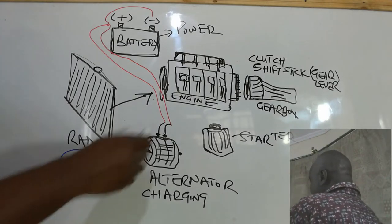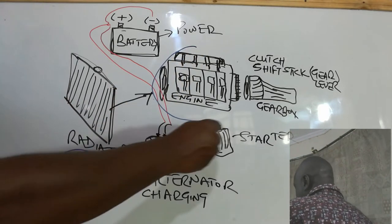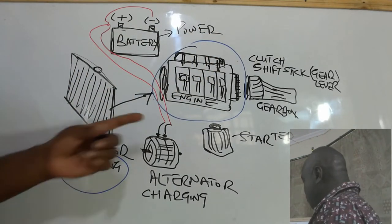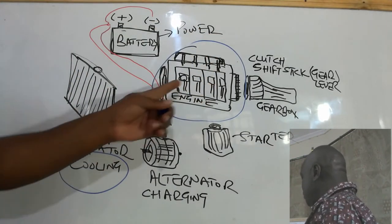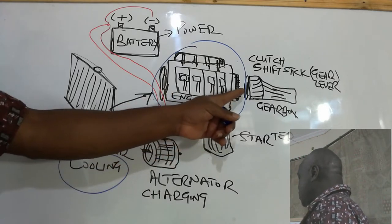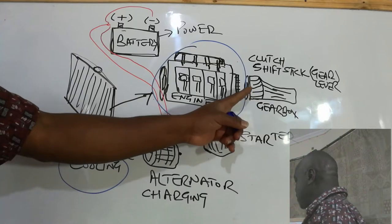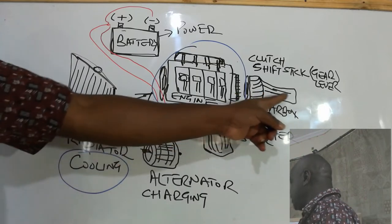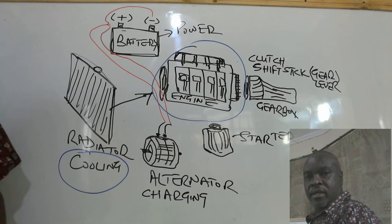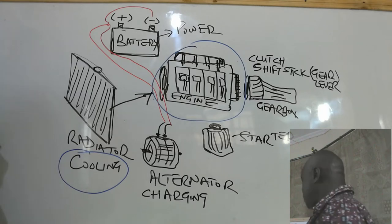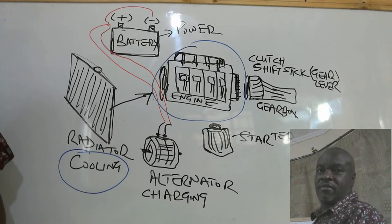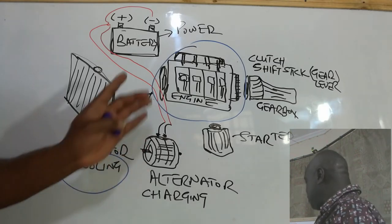We have the engine here. The purpose of the engine is to produce power, which is transferred to the gearbox, and the gearbox transfers that power to the wheels so that the car can move.